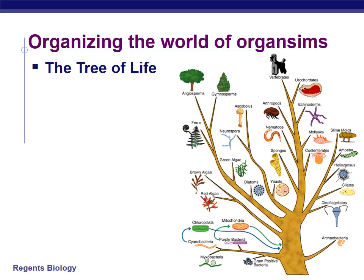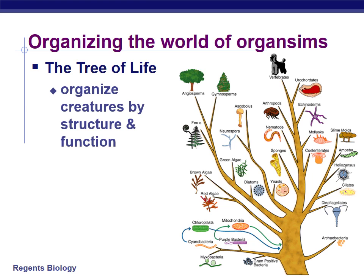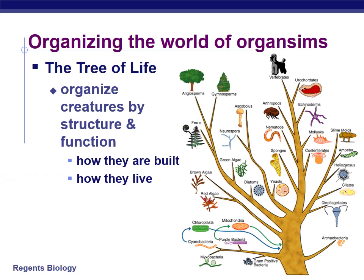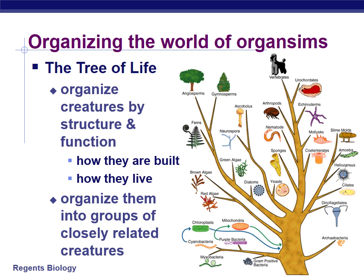It is human nature to want to classify things and group things. So we could group living things by their structure and function — how are they actually built, what do they physically look like, and how do they actually live? Do they need to consume others for food, or can they make their own food? Once we do that, we can organize them into groups of closely related creatures — all creatures with a backbone in one group, all those without a backbone in another.